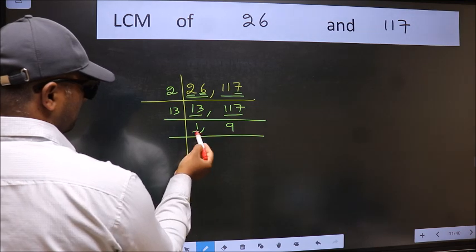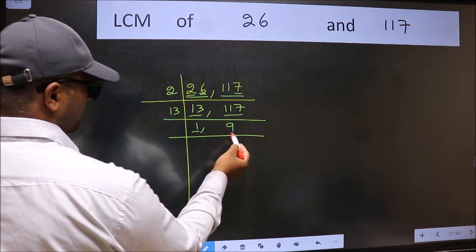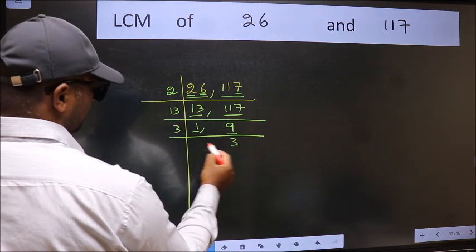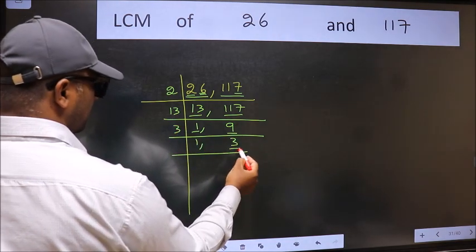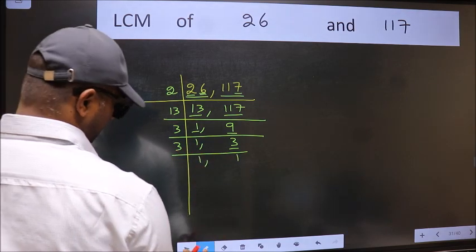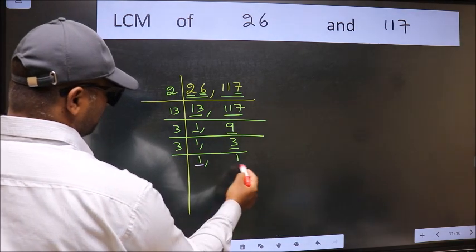Now we got 1 here. So focus on the next number 9. 9 is 3, 3 is 9. Now here we have 3, 3 is a prime number. So 3, 1 is 3. So we got 1 in both the places.